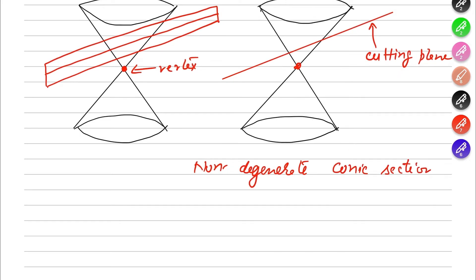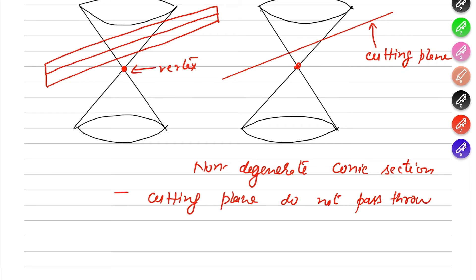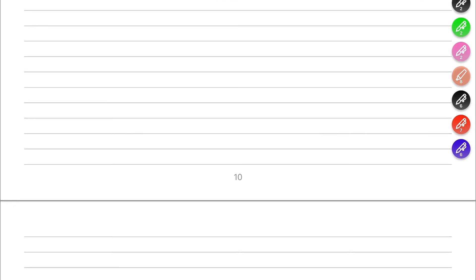This gives rise to a non-degenerate conic section. Why? Because in this case the cutting plane does not pass through the vertex of the cone. Whenever the cutting plane does not pass through the vertex of the cone, it gives rise to a non-degenerate conic section — that is, the parabola, hyperbola, ellipse, or circle.